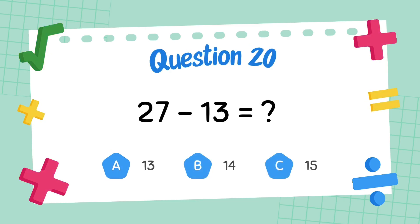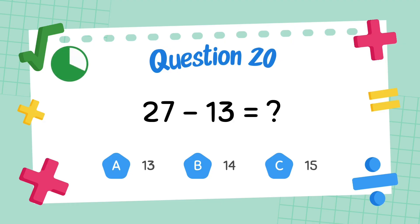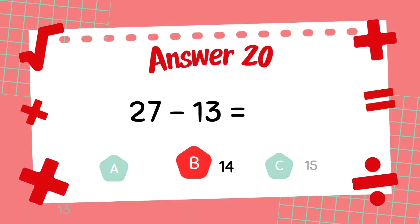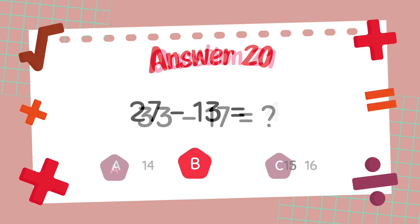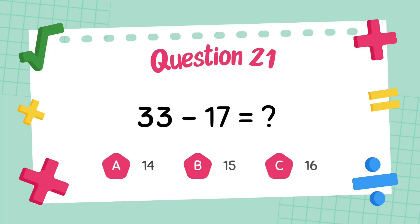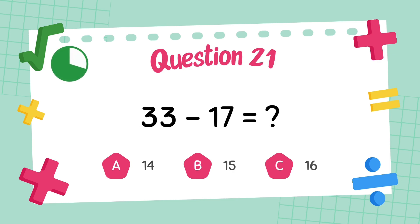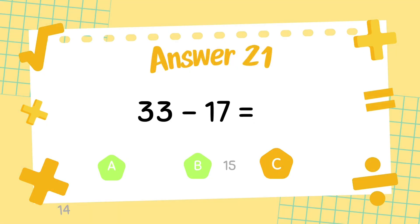What is 27 minus 13? The answer is 14. What is 33 minus 17? The answer is 16.